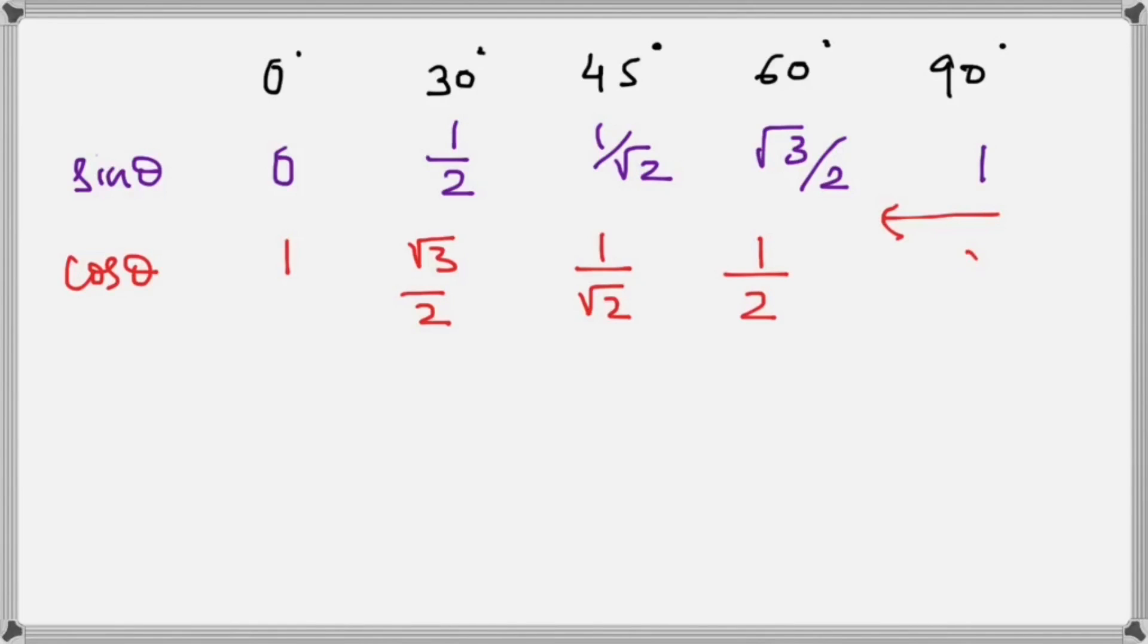Finally, tan θ is the ratio of sin and cos, so we will just write this first ratio divided by the second one. 0 by 1 is 0, and 1/2 divided by √3/2 is 1/√3.